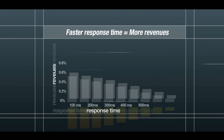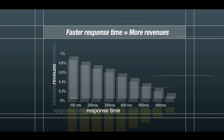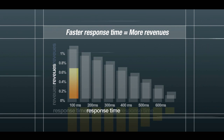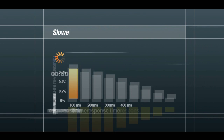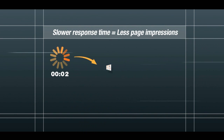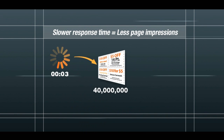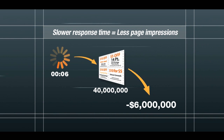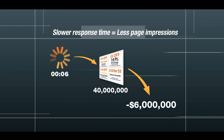For instance, Amazon's research shows that faster response time as small as 100 milliseconds can increase revenues by 1%. For Hotmail, 6 seconds of delay leads to a 40 million drop in ad impressions, resulting in $6 million revenue loss per year.